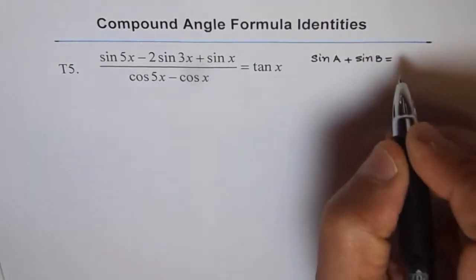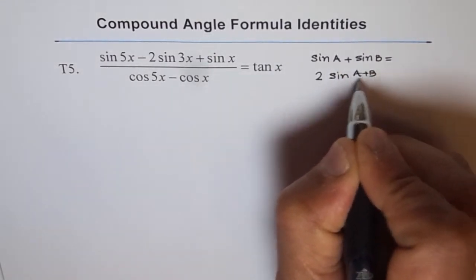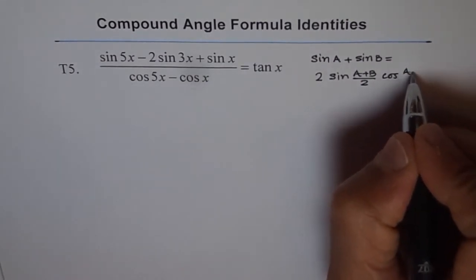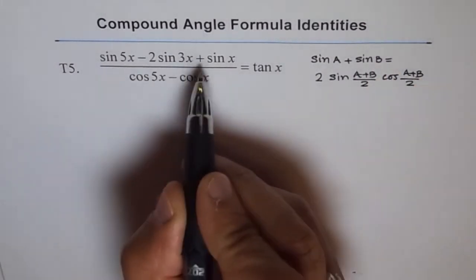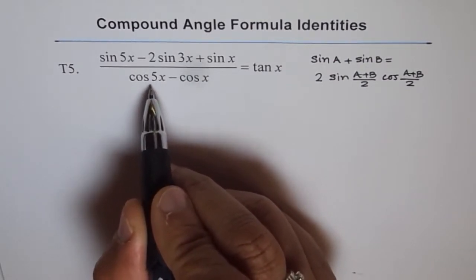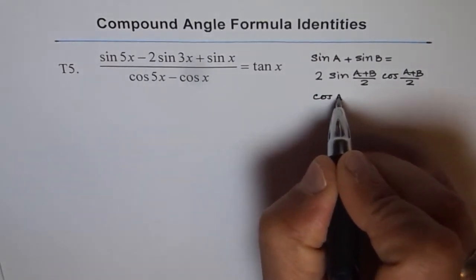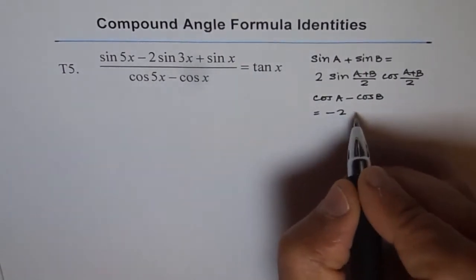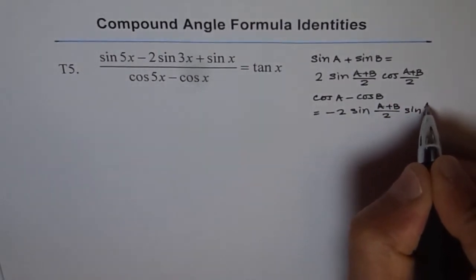The formula is: sin A plus sin B equals 2 sin((A+B)/2) cos((A-B)/2). That is the formula for sin A plus sin B, since we will have sin A plus sin B in the numerator. In the denominator we have cos A minus cos B, where A will be the angle 5x. The formula is: cos A minus cos B equals minus 2 sin((A+B)/2) sin((A-B)/2).